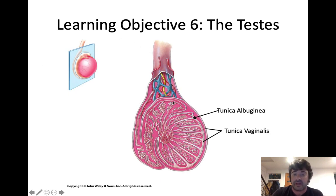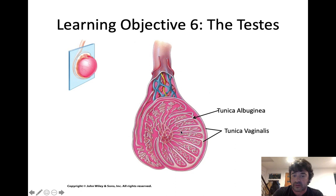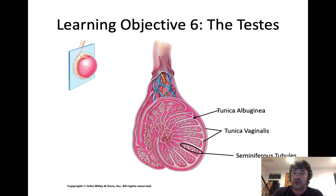The scrotum surrounds the testes, and the testes is the gonad in males. The testes is surrounded by a layer of dense connective tissue called the tunica albuginea and a serous membrane called the tunica vaginalis. The tunica albuginea has invaginations which separate the testes into a series of lobes. Within the testes, you have a series of tubes or ducts that play a very important role in reproduction. The ducts in the testes where spermatogenesis occurs are called the seminiferous tubules.